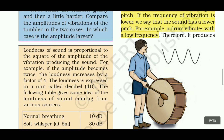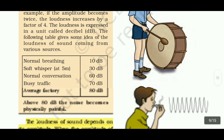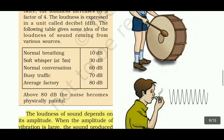The following table gives some idea of the loudness of sounds from various sources: normal breathing — 10 decibels; soft whisper — 30 decibels; normal conversation — 60 decibels; busy traffic — 70 decibels; average factory — 80 decibels. Above 80 decibels the noise becomes physically painful.